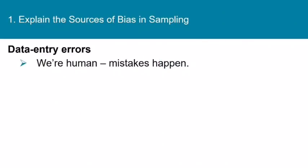Finally, in the non-sampling error category, there are data entry errors. Because we're human and mistakes happen — if you say yes but the pollster accidentally clicks no, that kind of error falls in the non-sampling error category.